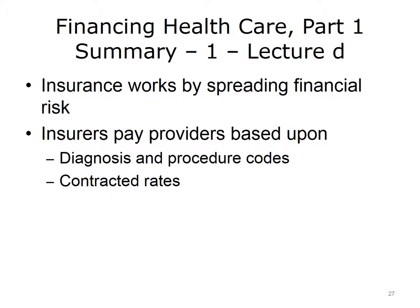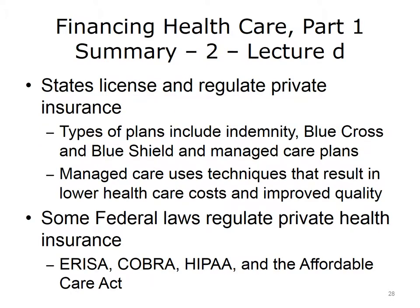This concludes Lecture D of Financing Healthcare Part 1. In summary, insurance works by spreading financial risk. Insurers pay providers based upon the diagnosis code, procedure code, or the service provided, and contractual agreements for fees. Individual organizations run private insurance and operate under state and federal laws. Different types of insurance plans include indemnity plans, Blue Cross Blue Shield plans, and managed care plans. The term managed care is used to describe techniques designed to provide comprehensive health care, manage outcomes and quality, and control costs. Managed care balances choice with cost, where fewer choices translate to lower insurance premiums and lower out-of-pocket costs. Both state and federal laws regulate private health insurance; the most important federal laws are ERISA, COBRA, HIPAA, and the Affordable Care Act.